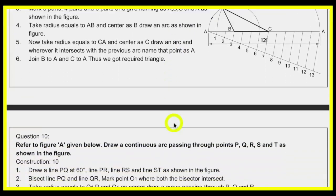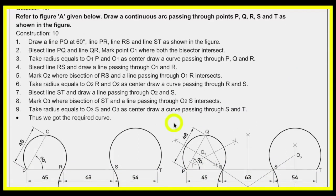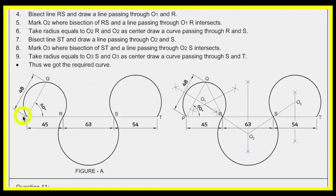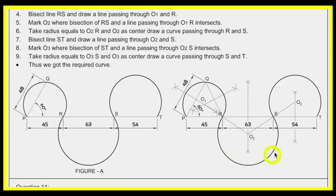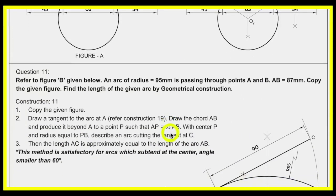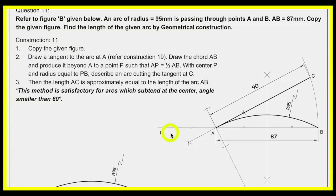You should know how to draw a continuous arc. In an exam they can give you five or six points and ask you to draw a continuous arc passing through PQRST. First, draw the curve passing through P, Q, R; bisect PQ and QR — wherever they meet is O1, and you draw the curve. Then bisect RS; from O1 to R extend to get O2, and from O2 draw the curve through R to S. Bisect ST; from O2 to S extend to get O3, and from O3 draw the curve.